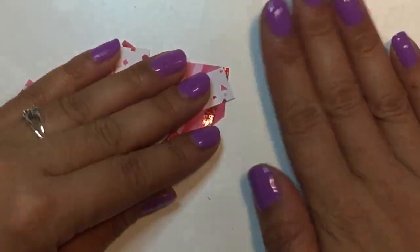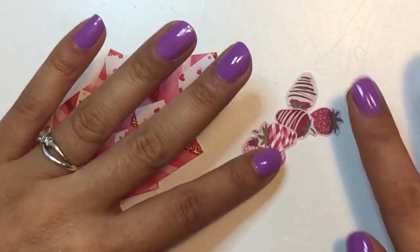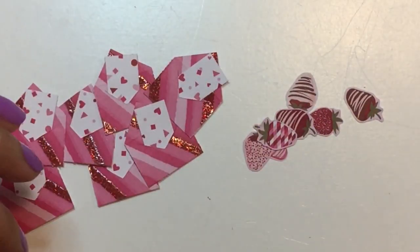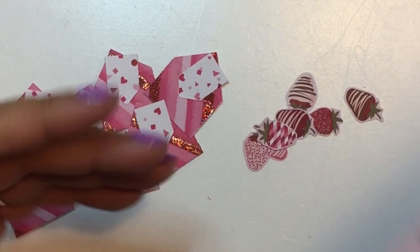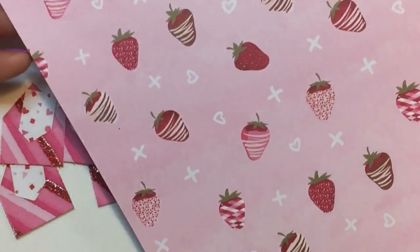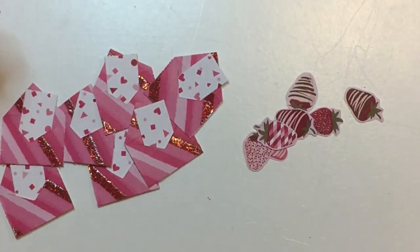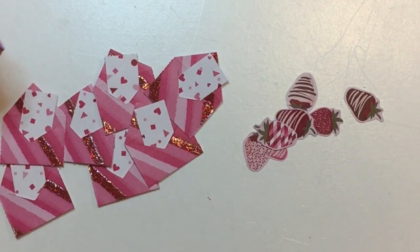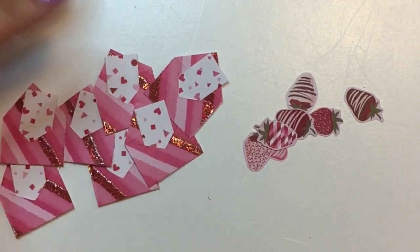And now that you have your envelopes, you can start embellishing them. I used these strawberries from this paper pad. I actually fussy cut them from the sheet of paper. I thought they were super cute, they're little dipped strawberries, chocolate covered strawberries, and I thought they were the perfect size for these envelopes too.